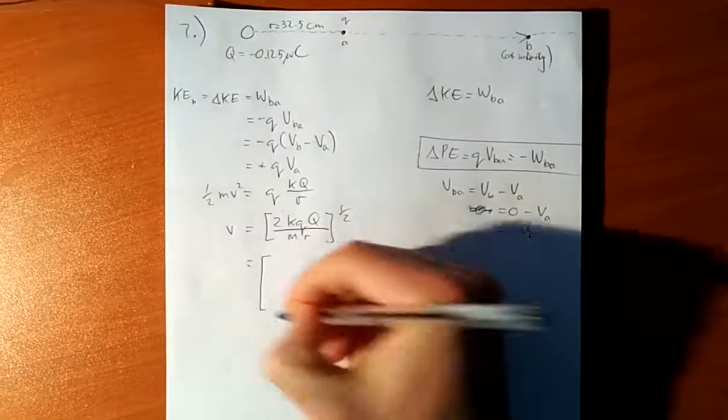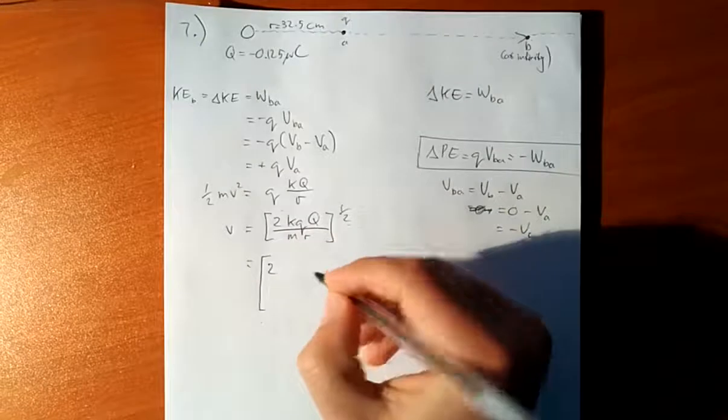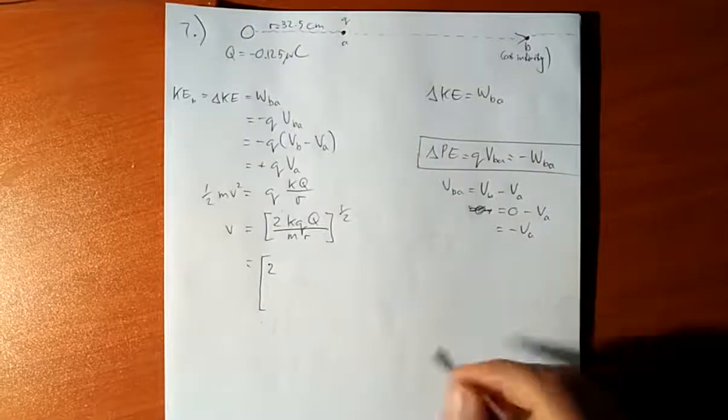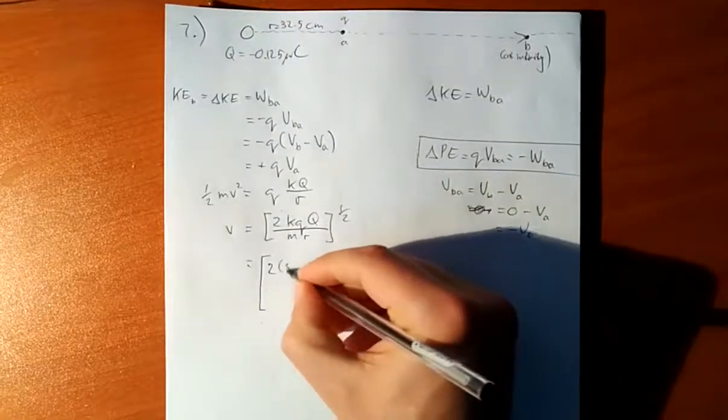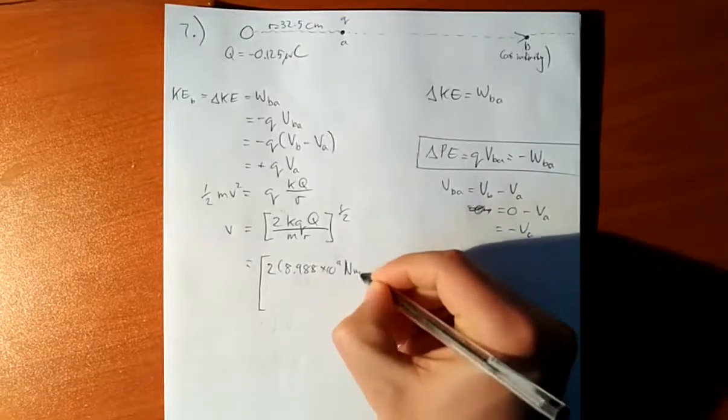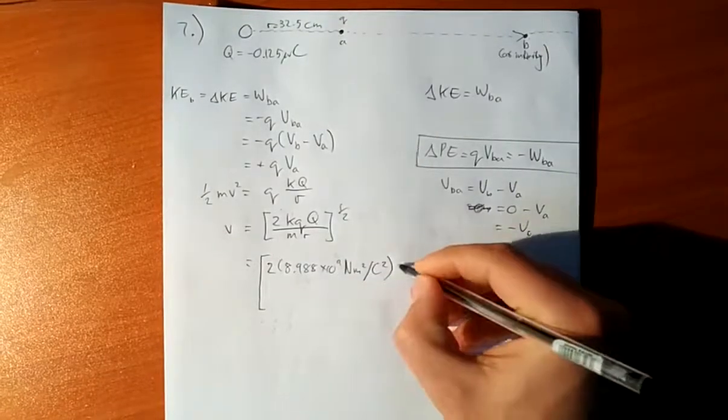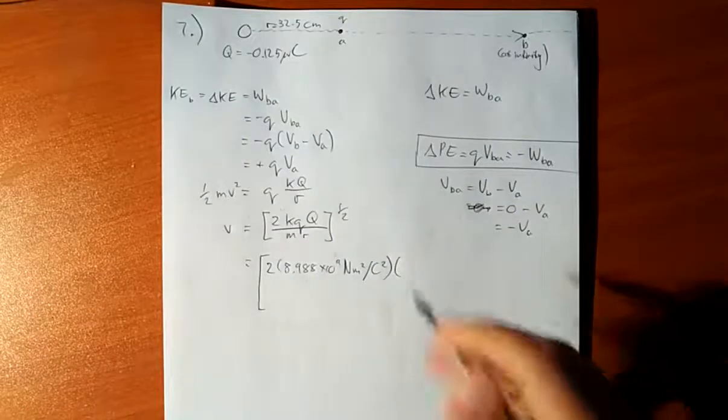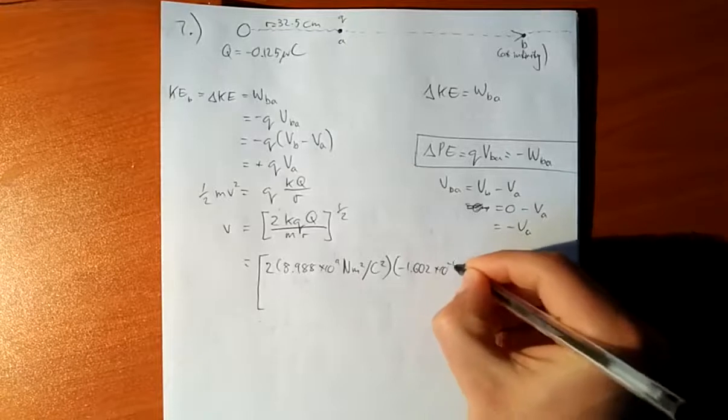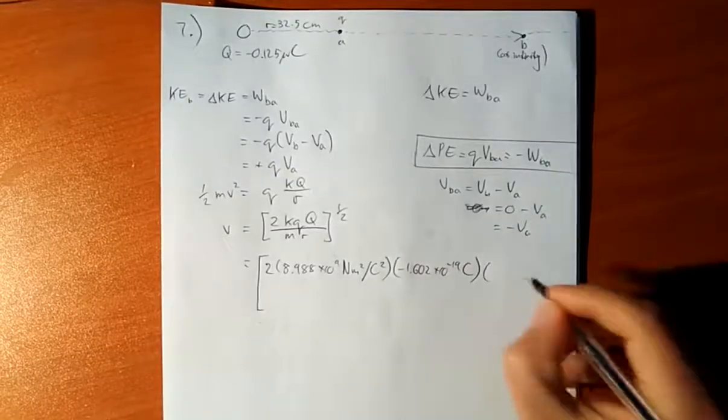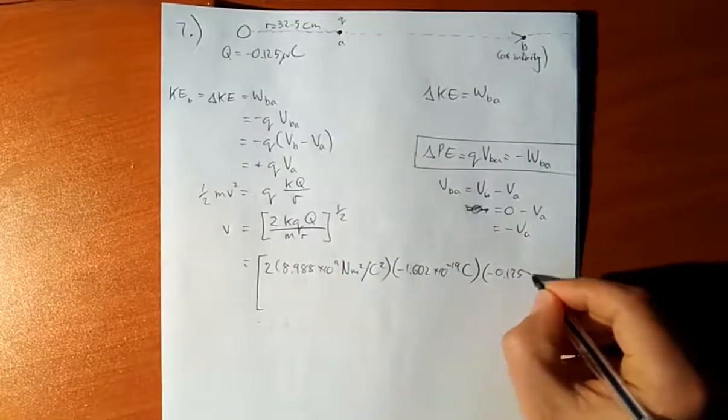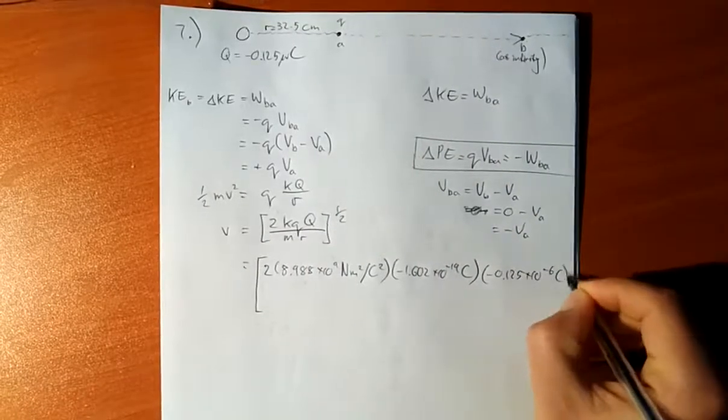Now let's substitute everything. Now, you've got to keep our heads. So, 2 times. What kind of accuracy do I have here? Three significant figures for values given. So, I'm going to use the more accurate value for K that I know: 8.998 times 10 to the 9 Newton meter squared per Coulomb squared. Times the charge of an electron, 1.602 times 10 to the minus 19 Coulombs. Times big Q is minus 0.125 times 10 to the minus 6 Coulombs.